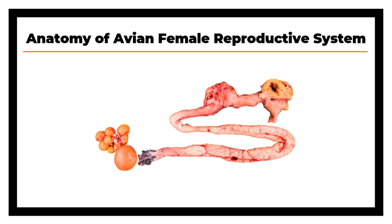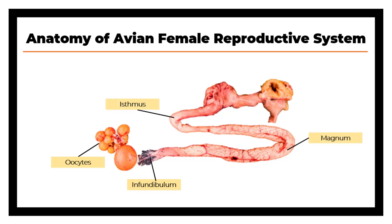This is the simplified avian female reproductive system. We have the oocytes, infundibulum, magnum, isthmus, uterus, vagina, cloaca, and vent.